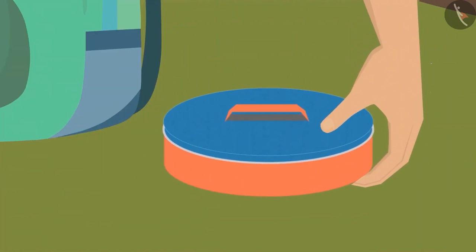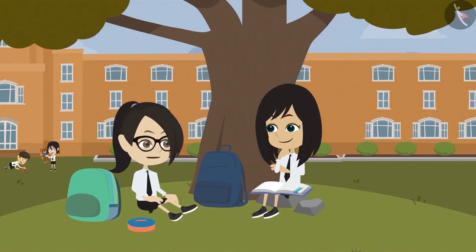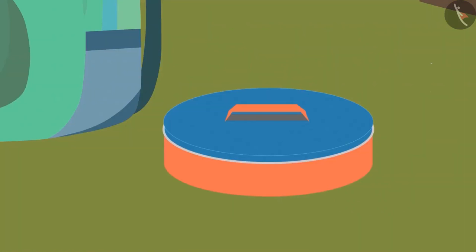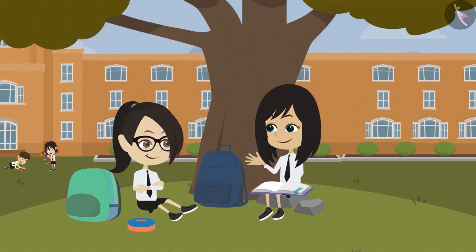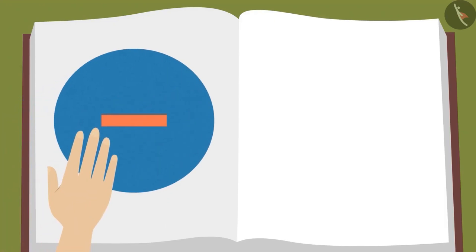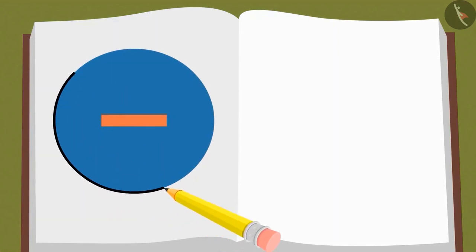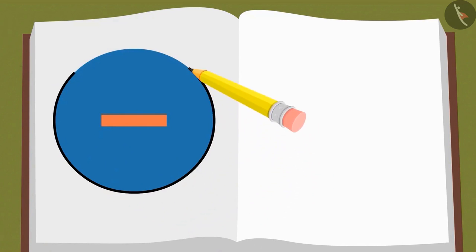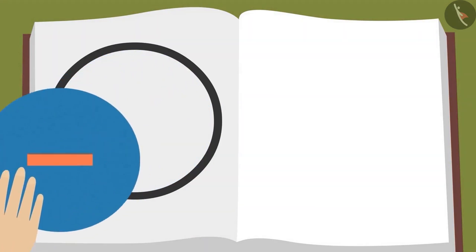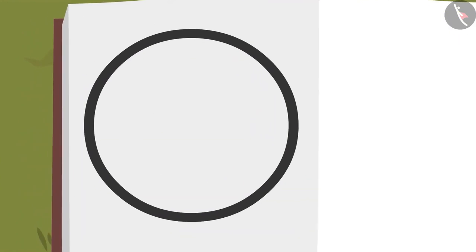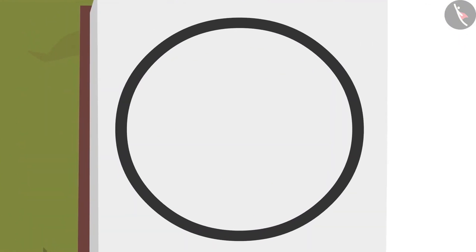The teacher brings out a tiffin box and asks about its shape. The tiffin box is round. The teacher places it on paper and traces its boundary with a pencil. After lifting the tiffin box, a round figure is created on the paper.